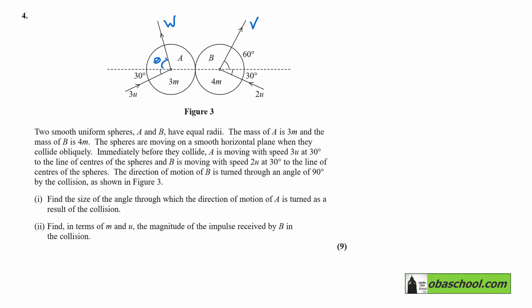So I'm going to use conservation of linear momentum. And we're going to look horizontally first. So we get 3M times 3u cos 30. Now that's for A. 3u cos 30 is the component of the original velocity that is along the dotted line.